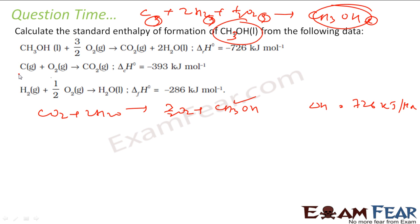Now I want carbon, so let's take this. I don't need to multiply anything because I need only one carbon. So C plus O2 gives CO2, and delta H was minus 393 kilojoule. So I got this carbon also.